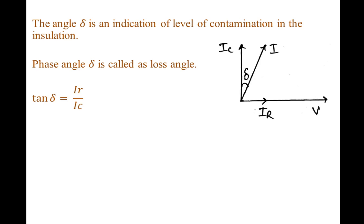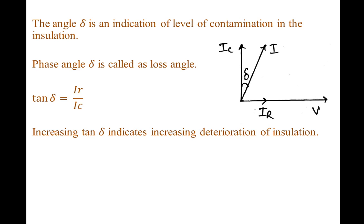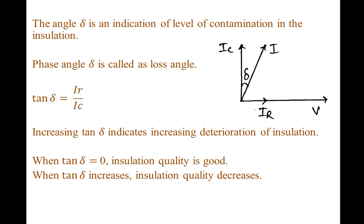The angle delta is equal to the ratio of resistive current and the capacitive current. Increasing tan delta indicates increasing deterioration of insulation. When tan delta is equal to 0, insulation quality is good. When tan delta increases, insulation quality decreases.